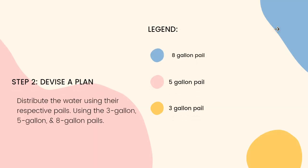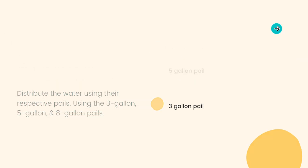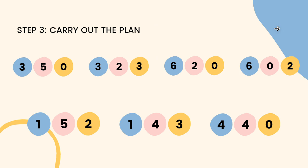Our devised plan consists of strategically transferring water alternating into different sizes of pails until it becomes equally divided. Carrying out the plan, we start by emptying the three gallon pail into the eight gallon pail. Once empty, we use the water from the five gallon pail to fill the three gallon pail, which leaves us with two gallons inside the five gallon pail. We then empty the three gallon pail again into the eight gallon pail, which now should have eight gallons inside. We then transfer the two gallons left in the five gallon pail into the three gallon pail.